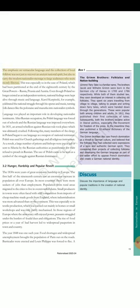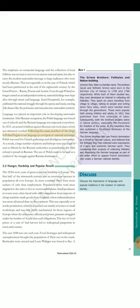The emphasis on vernacular language in the collection of local folklore was not just to recover an ancient national spirit, but also to carry the modern nationalist message to large audiences who were mostly illiterate. This was especially so in the case of Poland, which had been partitioned at the end of the 18th century by the great powers — Russia, Prussia and Austria. Even though Poland no longer existed as an independent territory, national feelings were kept alive through music and language. Karol Kurpiński, for example, celebrated the national struggle through his operas and music, turning folk dances like the Polonaise and mazurka into nationalist symbols. Language too played an important role in developing nationalist sentiments. After Russian occupation, the Polish language was forced out of schools and the Russian language was imposed everywhere. In 1831, an armed rebellion against Russian rule took place which was ultimately crushed. Following this, many members of the clergy in Poland began to use language as a weapon of national resistance. Polish was used for church gatherings and all religious instruction. As a result, a large number of priests and bishops were put in jail or sent to Siberia by the Russian authorities as punishment for their refusal to preach in Russian. The use of Polish came to be seen as a symbol of the struggle against Russian dominance.